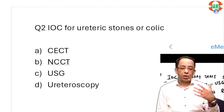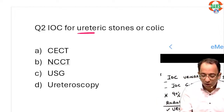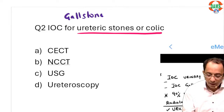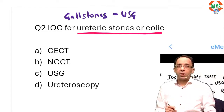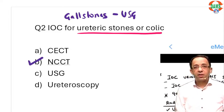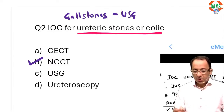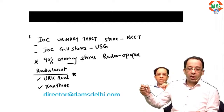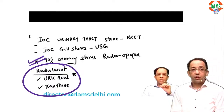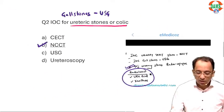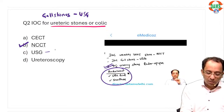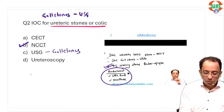The second question in the paper from radiology was: what is the investigation of choice if you are thinking of ureteric stone or ureteric colic? From our classes, we always discussed that if you are suspecting gallstones, you do an ultrasound; but if you are suspecting urinary stones, we always do an NCCT. Remember: 90% of urinary stones are radiopaque; uric acid and xanthine stones are radiolucent.